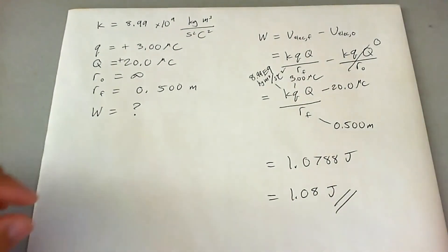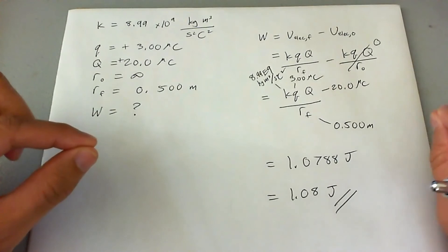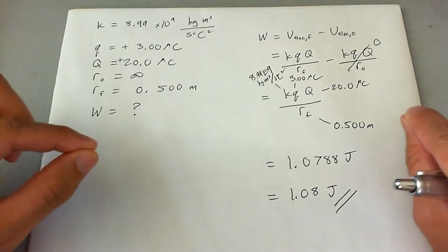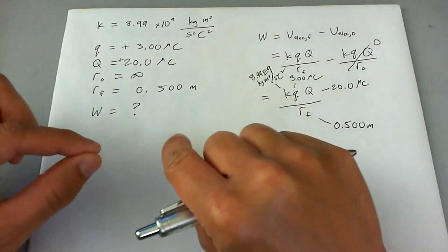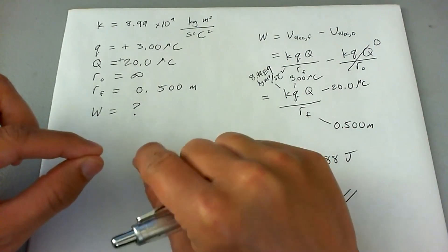So this is the work it takes to bring a little tiny charge from way out here at infinity, all the way to a half a meter away from the large charge right there.